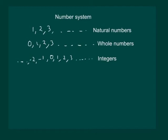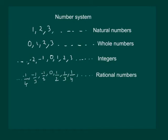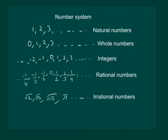Then came more complicated numbers — fractions, later known as rational numbers. Those numbers included numbers between whole numbers, like 1 by 2, 1 by 3, 1 by 4, and also include minus 1 by 2, minus 1 by 3, minus 1 by 4 and so on. In this chapter we will introduce you to even more complex numbers which will be called irrational numbers, such as root 2, root 3, root 15, or pi and so on.